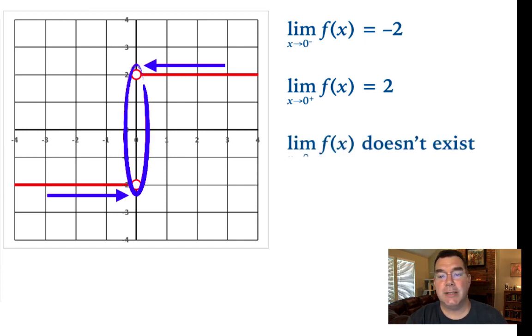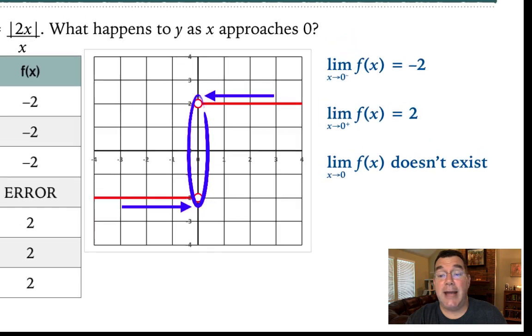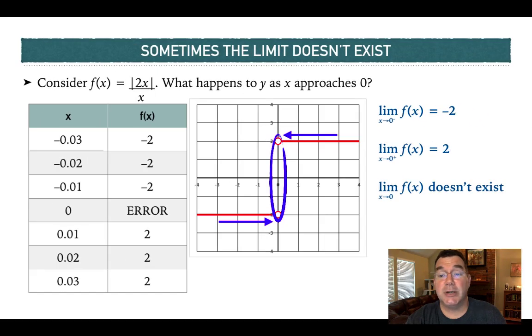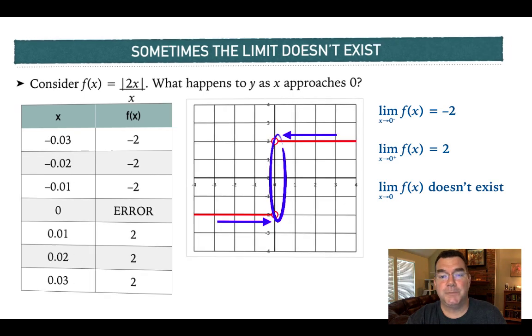There's a big discrepancy there. I can say that the limit as x approaches 0 does not exist, since the function approaches two separate y values as I approach the same x value.